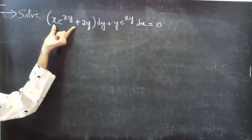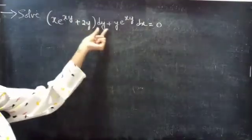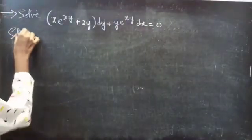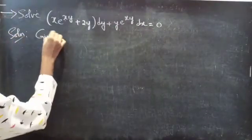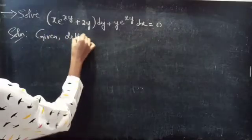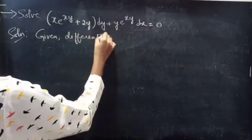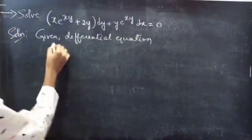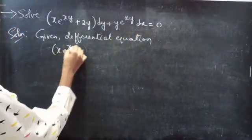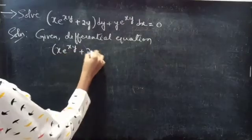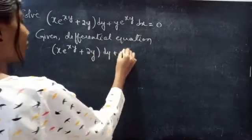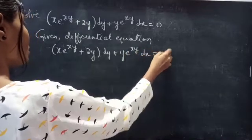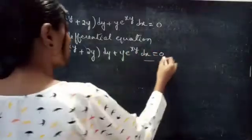Problem: Solve x into e power xy plus 2y into dy plus y into e power xy into dx equals to 0. Let's call this equation 1.